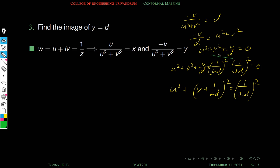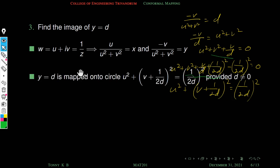Completing the square in v: u² + (v + 1/(2d))² = (1/(2d))². This is again a circle, provided d ≠ 0. So y = d maps onto this circle.